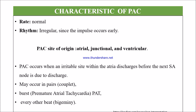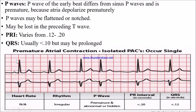Let's see the characteristics of premature atrial complexes (PAC). The rate is normal but the rhythm is irregular because impulses occur early. PAC may be atrial, junctional, or ventricular in origin. PAC occurs when an irritable site within the atria discharges before the next SA node impulse. It may occur in pairs (couplet), in bursts (premature atrial tachycardia), or every other beat (bigeminy).